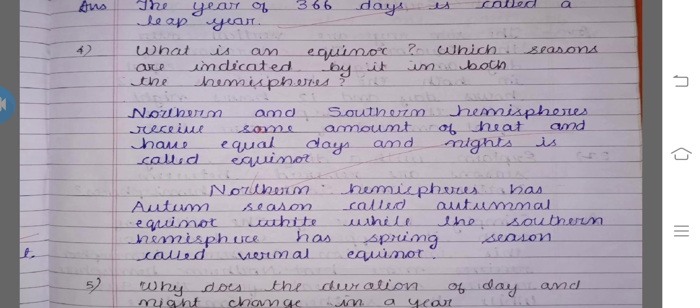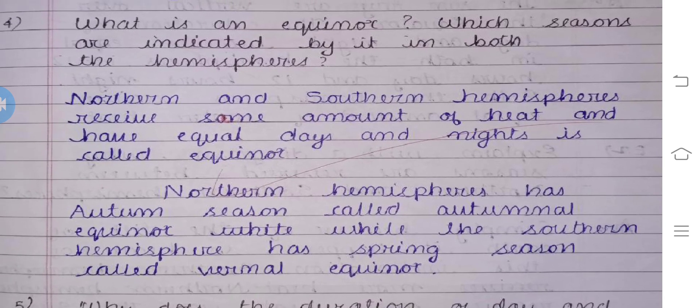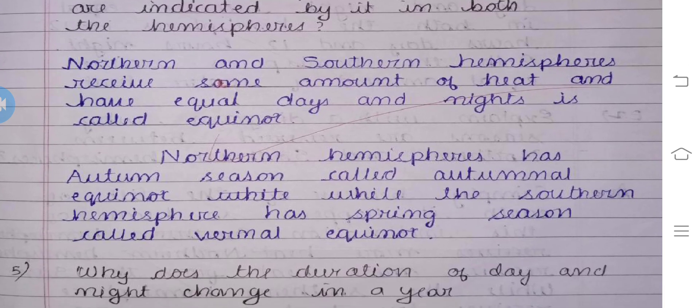Question number 4: What is an equinox? Which seasons are indicated by it in both hemispheres? The northern and southern hemisphere receive the same amount of heat and have equal days and nights — that is 12 hours day and 12 hours night. This is called equinox. If in the northern hemisphere it is autumn season, then it is autumnal equinox. If in the southern hemisphere it is spring season, then it is vernal equinox.